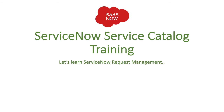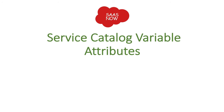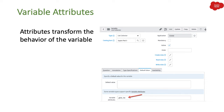In this session we are going to talk about Service Catalog variable attributes. This session is a continuation of our previous two sessions where we talked about variables, different types of variables, and we also created different types of variables in ServiceNow Service Catalog. Variable attributes transform the behavior of the variable — if you have created a variable and want to change its default behavior, you use attributes. As you can see on the screen, we have a variable called list collector and there is a field called variable attributes where you can mention the new attribute to change the behavior.